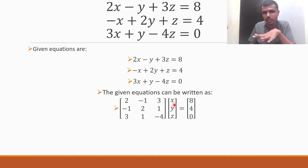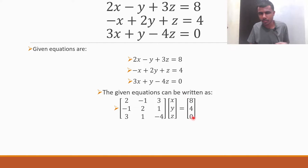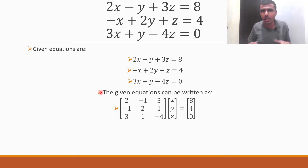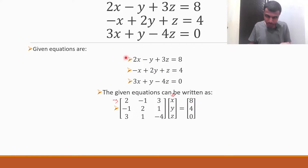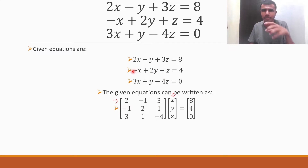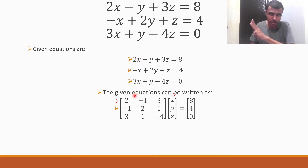In between just put x, y, z. Here also likewise: minus 1, 2, 1. And 3, 1, minus 4. And 0, 8, 4, 0. You can just multiply the first row with this: 2 into x plus minus 1 into y plus 3z equal to 8. So that's how you get the first equation. Likewise, if you multiply the second row you get the second equation, and the third row gives the third equation.